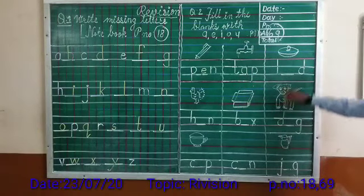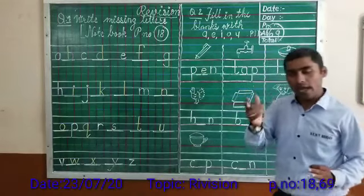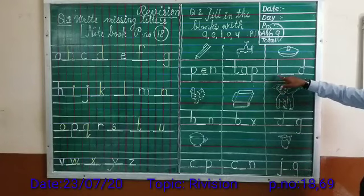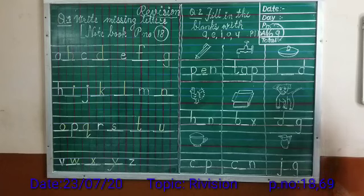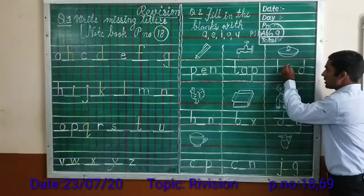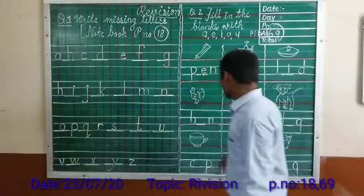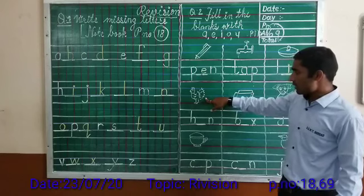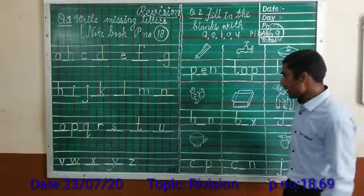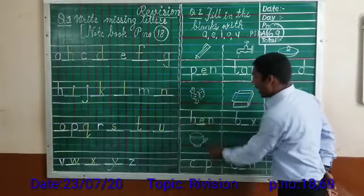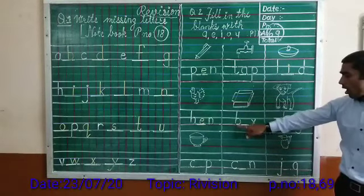Next one — which picture is this? Lead. Lead means down — put it down. L, E, A, D — lead. Let us read: L, E, A, D. What is missing? I. L, I, D — lid. Here the first line is completed. Next one is head. H, E, A, D — head. What is missing here? E. H, E, A, D — head.